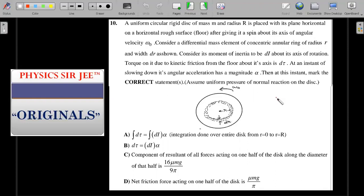At the end of the video, I'll also give you a practice problem on this scenario. A uniform circular rigid disc of mass M and radius R is placed with its plane horizontal on a horizontal rough surface after giving it a spin about its axis with angular velocity omega_0. Consider a differential mass element of concentric annular ring of radius r and width dr. Consider its moment of inertia to be dI about its axis of rotation. The torque on it due to kinetic friction from the floor about its axis is d tau. At an instant of slowing down, its angular acceleration has a magnitude alpha. Then at this instant, mark the correct options. Assume uniform pressure of normal reaction on the disc.